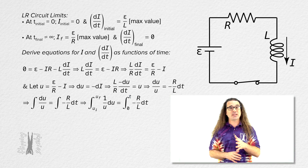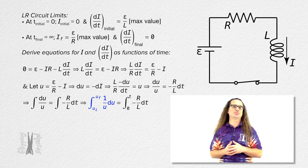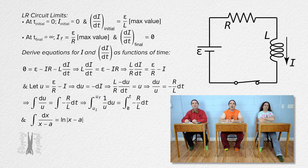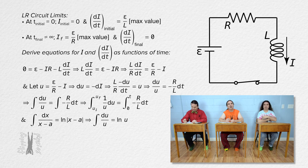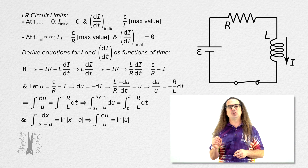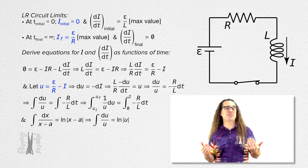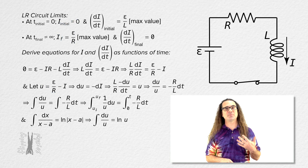Let's take some integrals, starting on the left-hand side. What is the integral of 1 over u with respect to u? We know the integral of the multiplicative inverse of x minus a constant a with respect to x equals the natural log of the absolute value of x minus the constant a. So the integral of 1 over u with respect to u equals the natural log of u. In this case, u equals emf divided by resistance minus current, and current varies from zero to emf divided by resistance, which means u is never negative — therefore we can remove the absolute value.